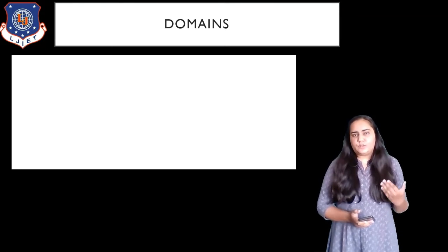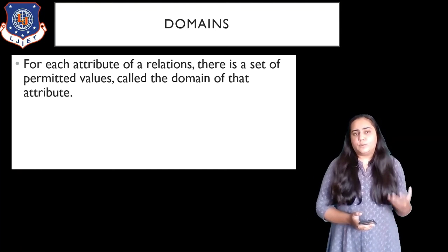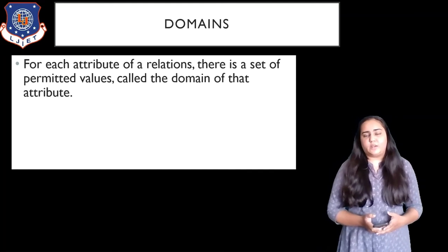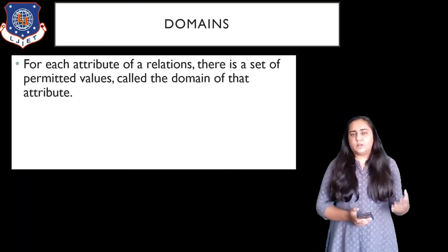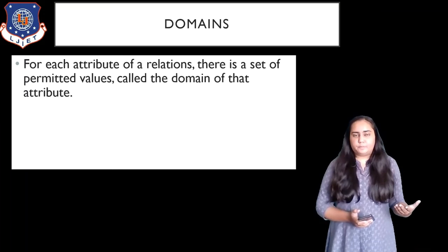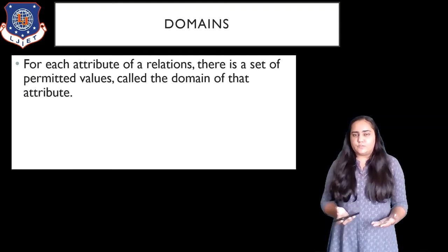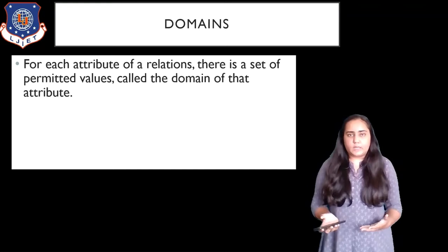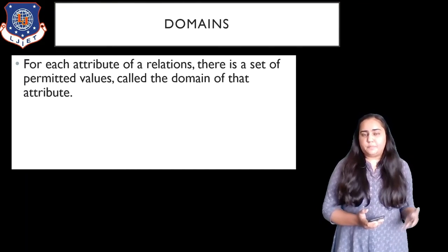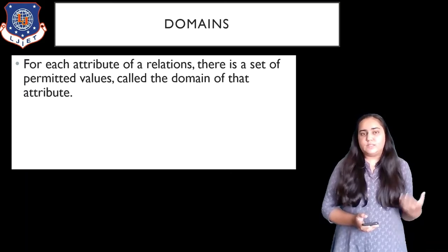Now let's see what domains are — one of the important concepts in the relational model. For each attribute of a relation, there is a set of permitted values, and that is known as the domain. For example, occupation is a column in which only occupations are allowed. If you try to store somebody's name in occupation, that would be wrong. The set of permitted values for the occupation column includes all occupations — doctor, nurse, engineer, etc. — but not a person's name.